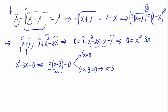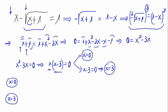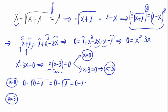This way we found two solutions for the equation: X equals 0 and X equals 3. But these are the solutions for the equation squared. To find out if they are also possible solutions for the original equation, we have to substitute. If we substitute X equals 0, we have 0 minus the square root of 0 plus 1, that is 0 minus the square root of 1, 0 minus 1 equals minus 1.